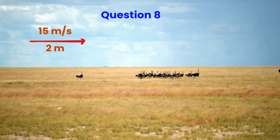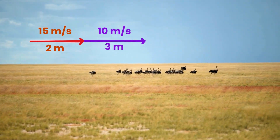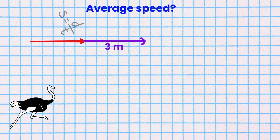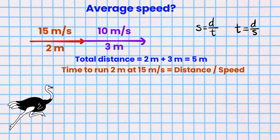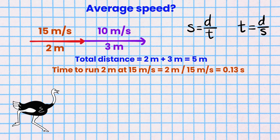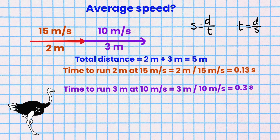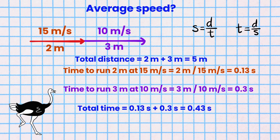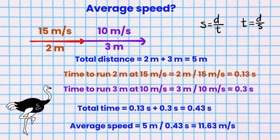Question 8. An ostrich runs at a speed of 15 meters per second for a distance of 2 meters, then it runs at a speed of 10 meters per second for 3 meters. What is the average speed of the ostrich? Average speed is total distance divided by total time. The total distance is 5 meters. The time to run 2 meters at 15 meters per second equals 2 divided by 15, which equals 0.13 seconds. Time to run 3 meters at 10 meters per second equals 3 divided by 10, which equals 0.3 seconds. Total time is 0.13 plus 0.3 seconds. Average speed is 5 meters divided by 0.43 seconds, which equals 11.63 meters per second.